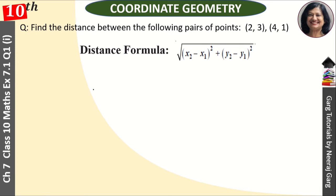Toh hamara jo distance hojayega that is equal to under root of x2 hamara four minus two ka whole square plus one minus three ka whole square.